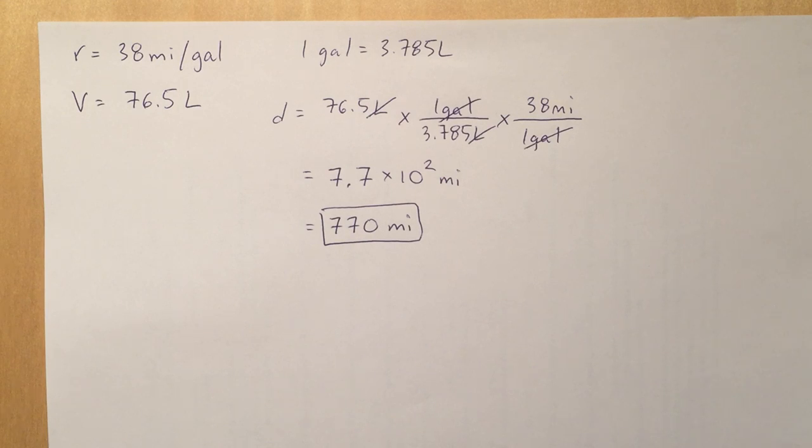So you put the gallons on the bottom, it's just like how it's written there as it's given, and the miles on top. And that allows you to cancel out your gallons, giving you miles for your answer.